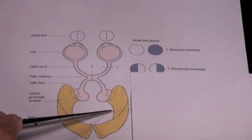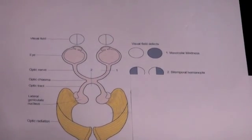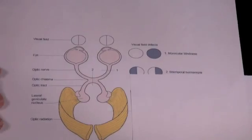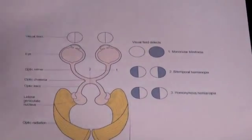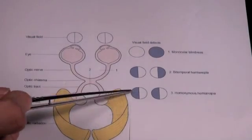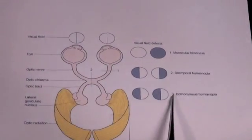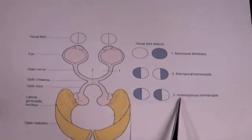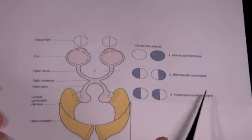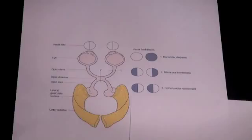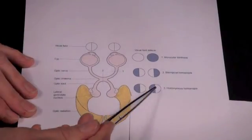And that's going to give you an appearance like that. And that's a homonymous hemianopia. In this case, it would be a left homonymous, meaning same side of the visual field. Hemianopia meaning half field lost. And so that would be a left homonymous hemianopia.